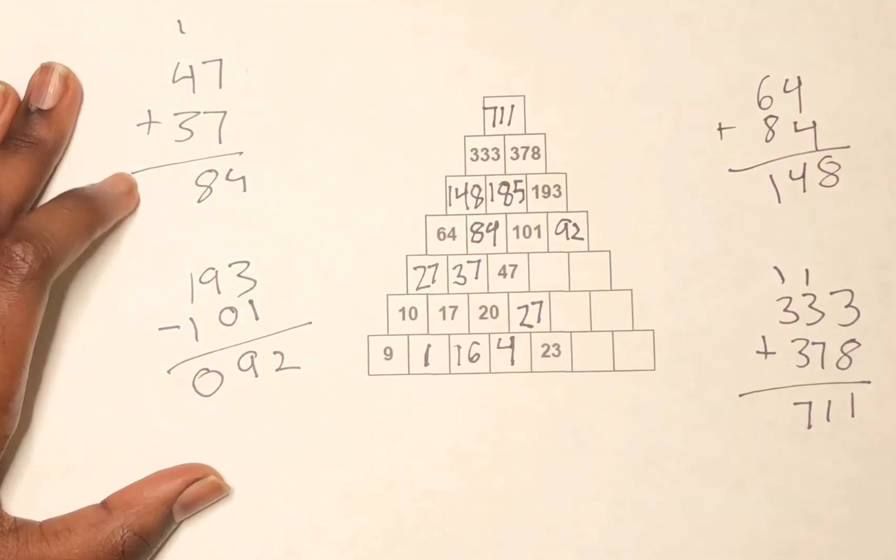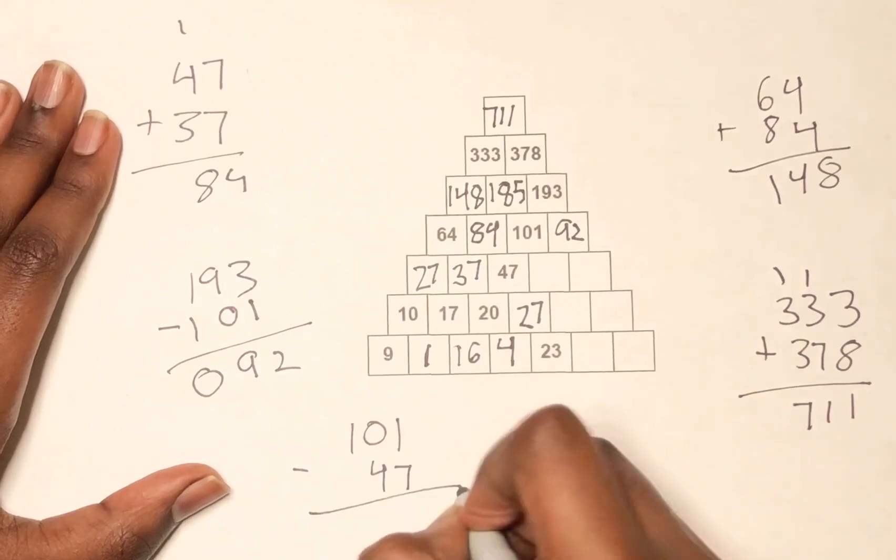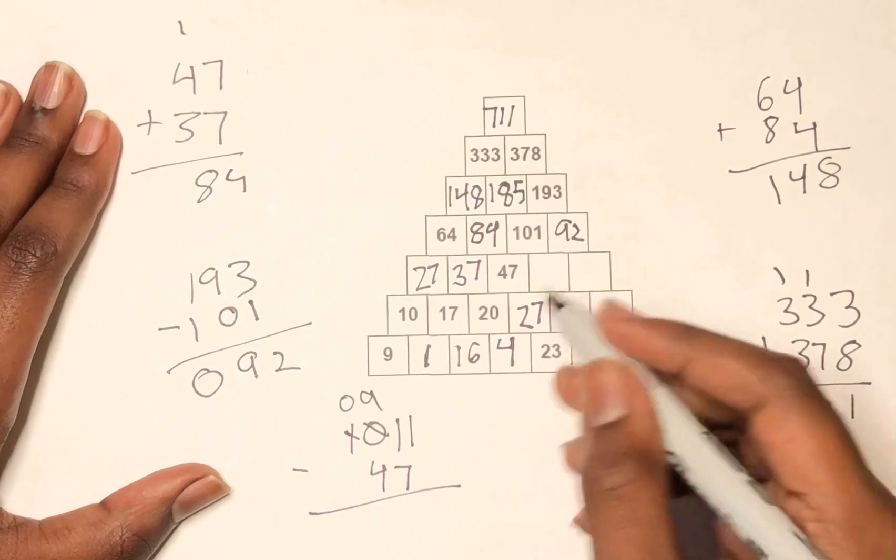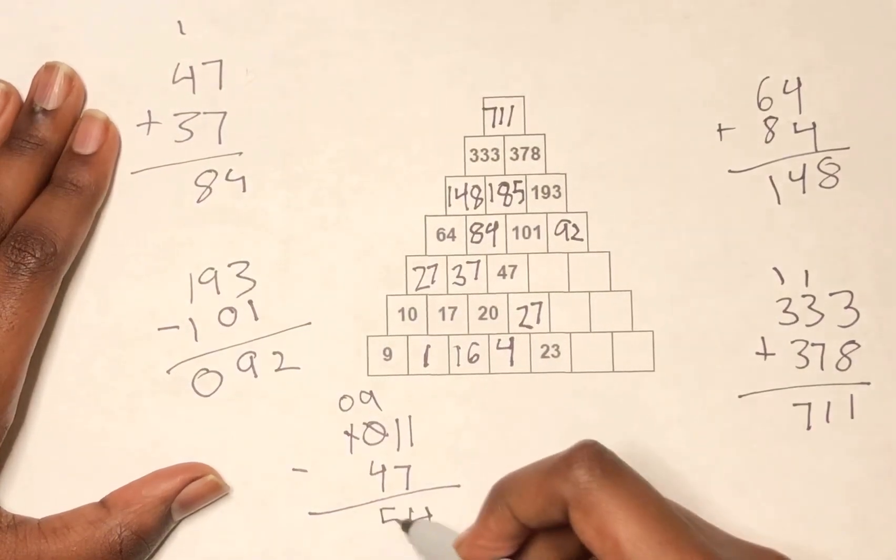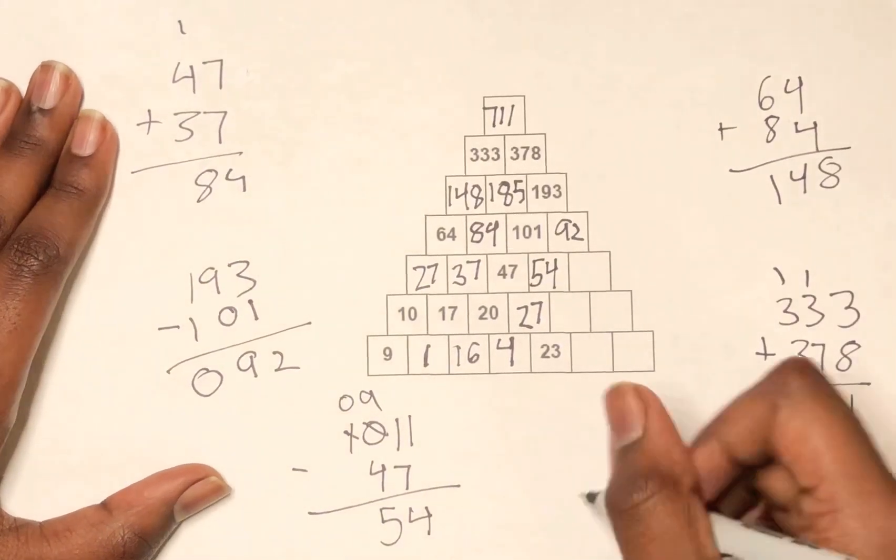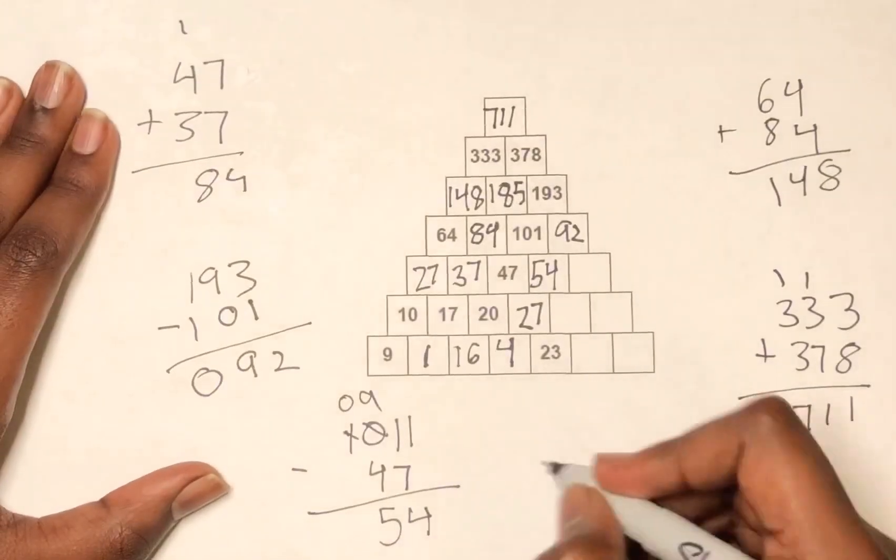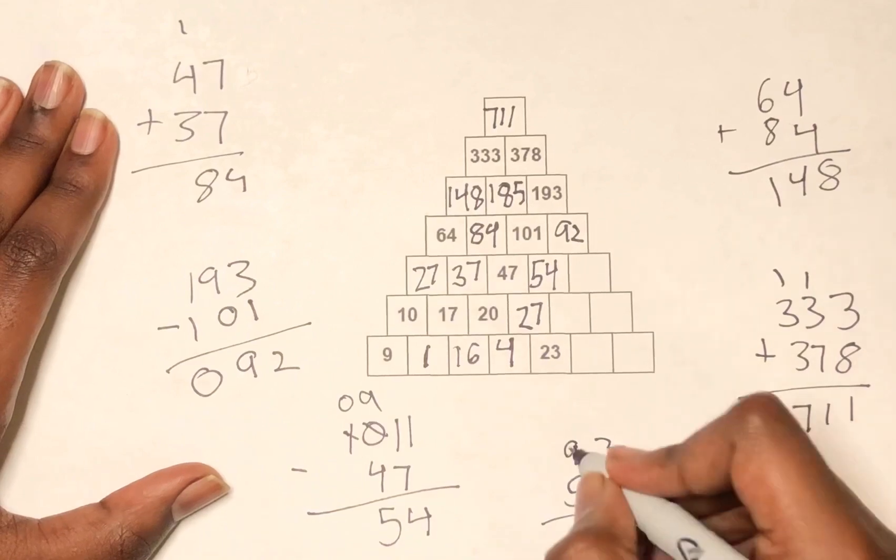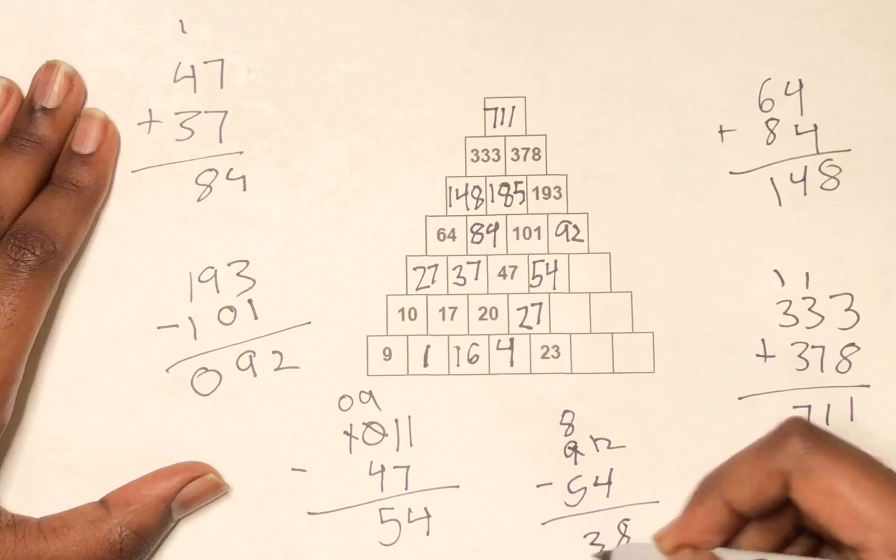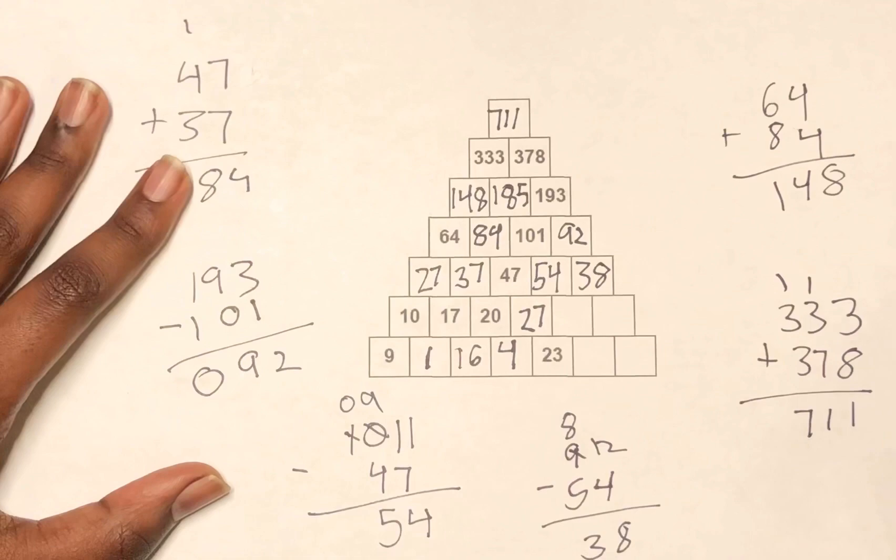So then we do 101 minus 47. So then 54 plus something equals 92. So we can do 92 minus 54.